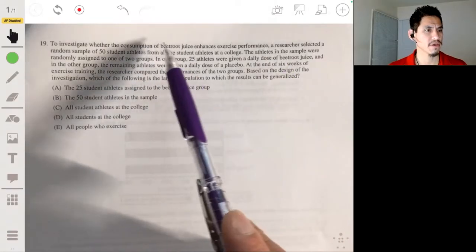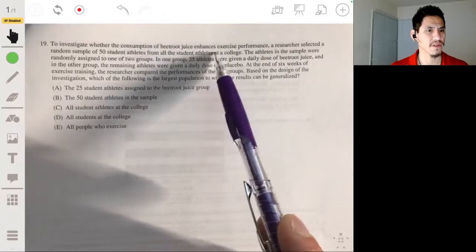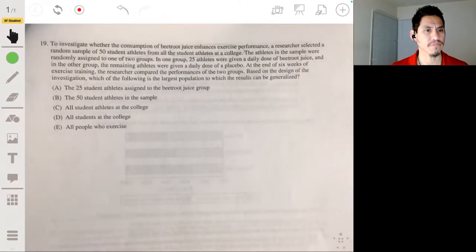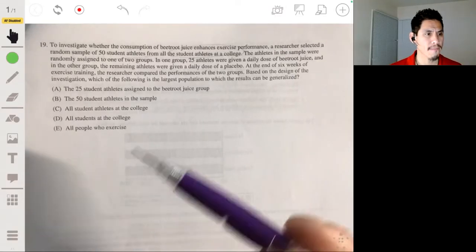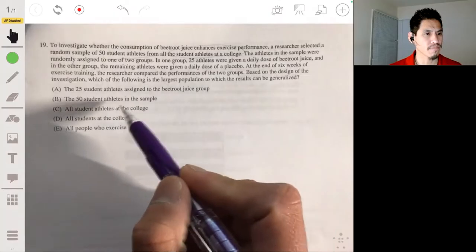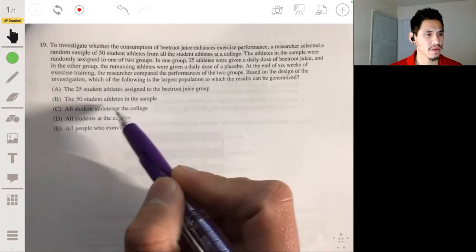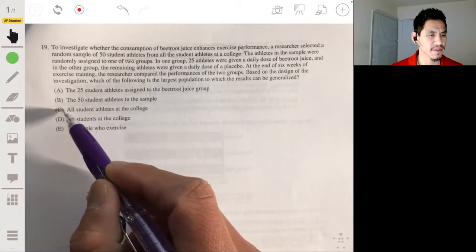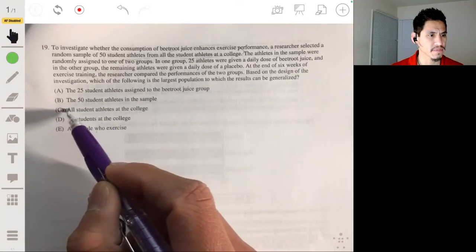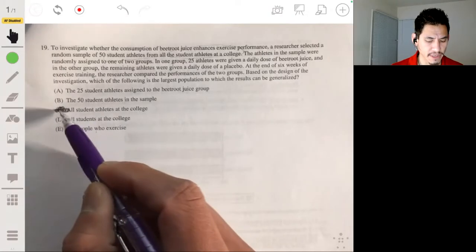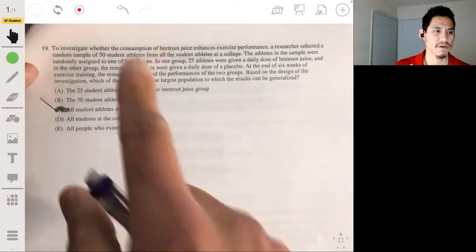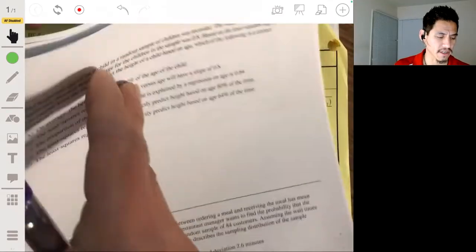Okay, so we took a random sample of 50 student athletes from all the student athletes at the college. It's probably going to be all student athletes at the college. So, not all students, not E or D. C would be the best answer. Since they were randomly selected, we can generalize it to all the student athletes at that college.